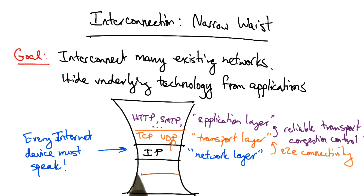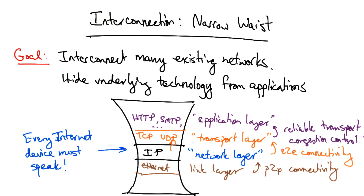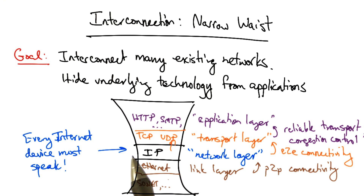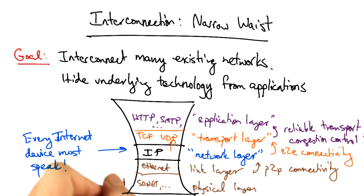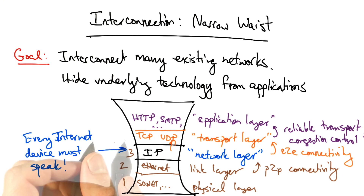Below the network layer, we have other protocols. The link layer provides point-to-point connectivity, or connectivity on a local area. A common link layer protocol is Ethernet. Below that, we have the physical layer, which includes protocols such as SONET for optical networks, and so forth. The physical layer is sometimes called layer one, the link layer is sometimes called layer two, and the network layer is sometimes called layer three.